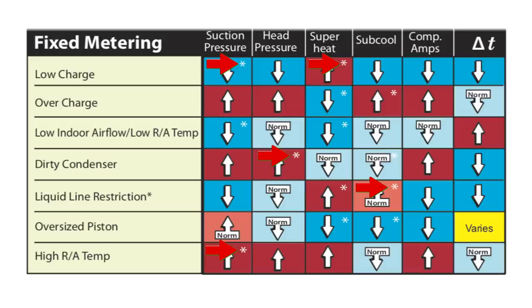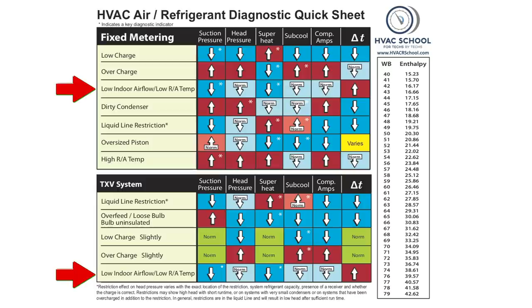We have little white stars as your key diagnostic indicators. It's not that the other readings don't matter, but they're going to be tougher to follow for this problem. When looking for low indoor airflow with a low return air temperature, you really want to look at suction pressure and superheat. But let's make it even more simple than this.